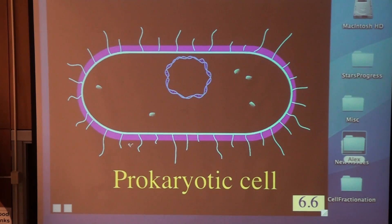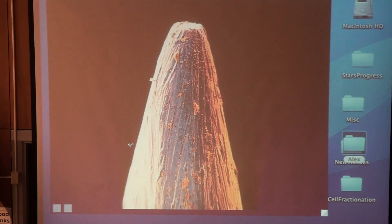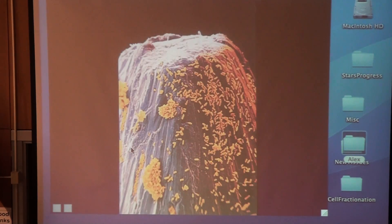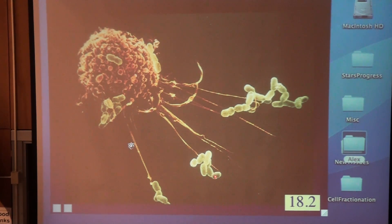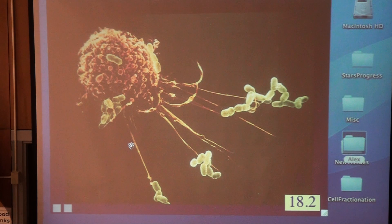It is a tiny cell compared to our big eukaryotic cells. This is the tip of a needle with some prokaryotes — some bacteria — on it. And here's a eukaryotic cell, actually one of your immune system cells, eating some prokaryotes — these little green guys right there. You can see the difference in size. Eukaryotic cells are larger, more complex, more evolved cells than simple little prokaryotic cells.